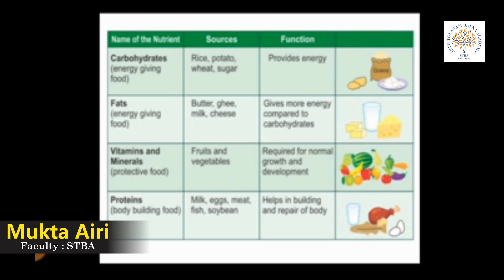The third nutrient is vitamins and minerals, known as protective food. The sources of vitamins and minerals are fruits and vegetables, and their function is required for normal growth and development. The fourth one is protein, known as body building food. The sources of protein are milk, egg, meat, fish and soya bean. The function of protein is helping in building and repairing the body.